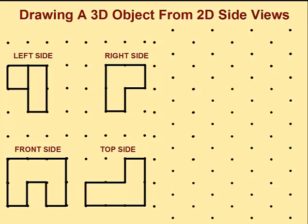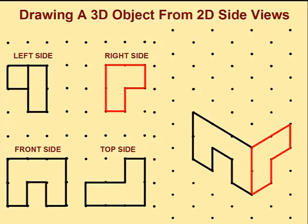We'll begin with the front side of the object and place it on the isometric dot paper. Next, we'll attach the right side of the object and put it on the dot paper, followed by the top side.